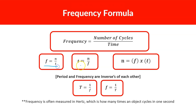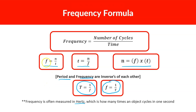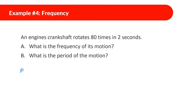Period and frequency are inverses of each other: period equals one divided by frequency, and frequency equals one divided by period. Frequency is measured in hertz, meaning how many times an object cycles in one second. Example: An engine's crankshaft rotates 80 times in two seconds. Frequency equals 80 divided by 2, which equals 40 hertz — meaning the crankshaft rotates 40 times per second.